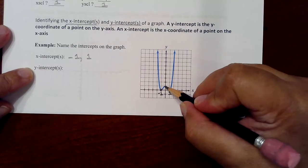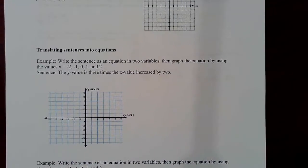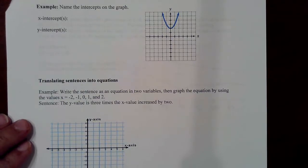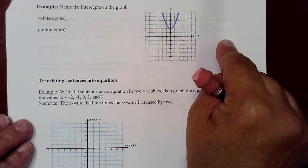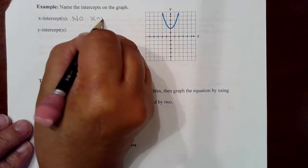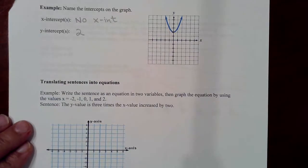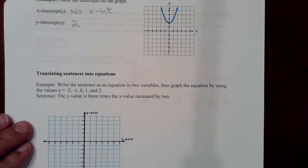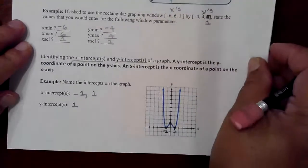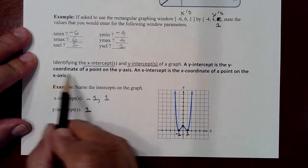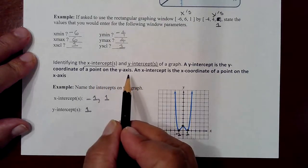For the Y-intercept, the graph hits right here at positive 1. Moving to the next graph — another parabola — what is the X-intercept? It doesn't hit the X-axis at all, so there is no X-intercept, or you can just put none. The Y-intercept: the graph does hit the Y-axis right at 2. The Y-intercept is just the Y-coordinate of the point on the Y-axis that's on the graph, and the X-intercept is just the X-coordinate. We've been naming either the X or Y-coordinate when asked for the intercept.